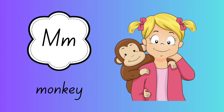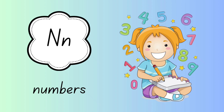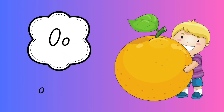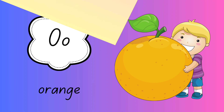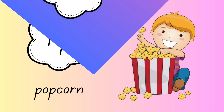M for monkey. M-O-N-K-E-Y. Monkey. N for numbers. N-U-M-B-E-R-S. Numbers. O for orange. O-R-A-N-G-E. Orange. P for popcorn. P-O-P-C-O-R-N. Popcorn.